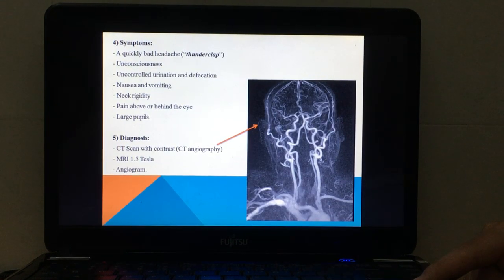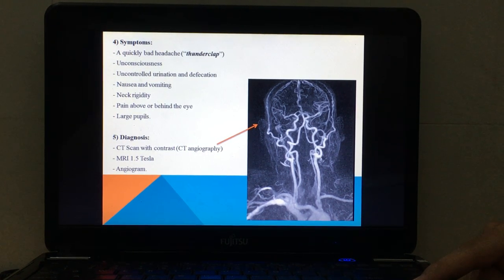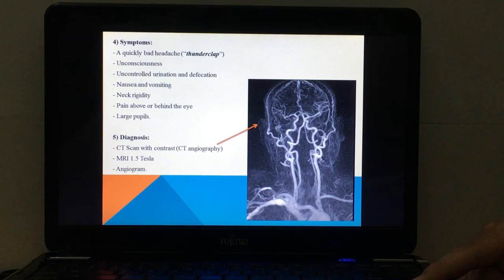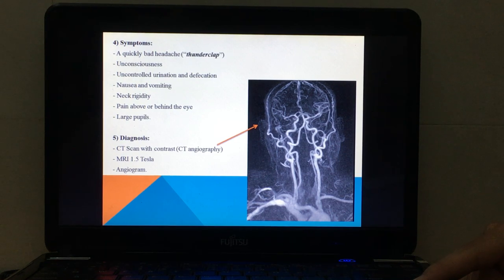Factors about the symptoms: a quickly bad headache, or we can call it a thunderclap. We have unconsciousness, uncontrolled urination and defecation, nausea and vomiting, neck rigidity.